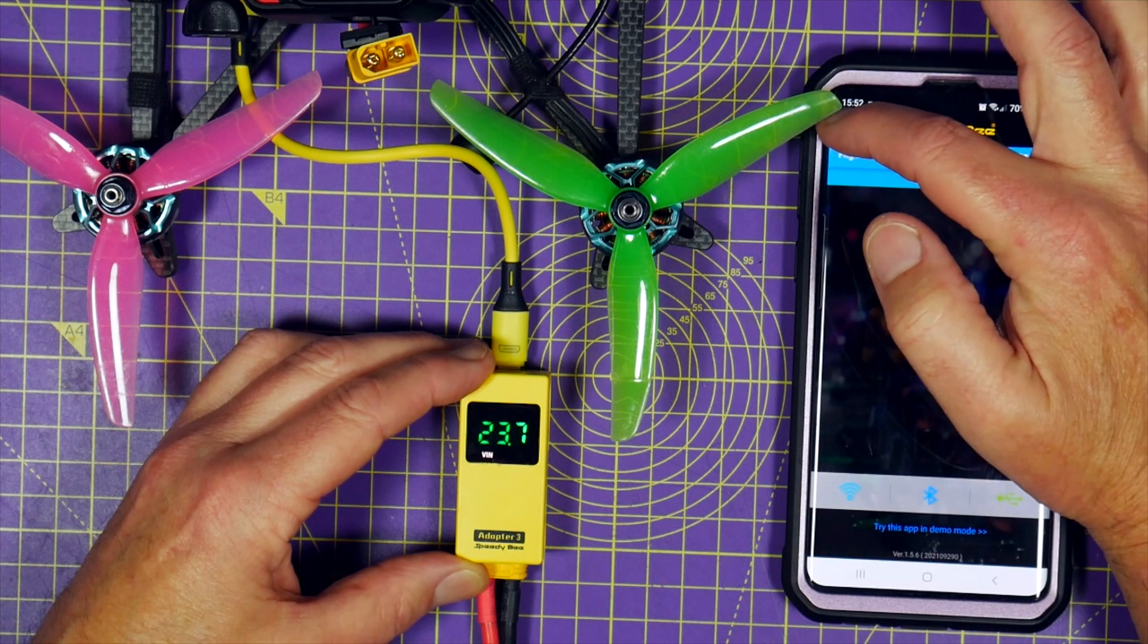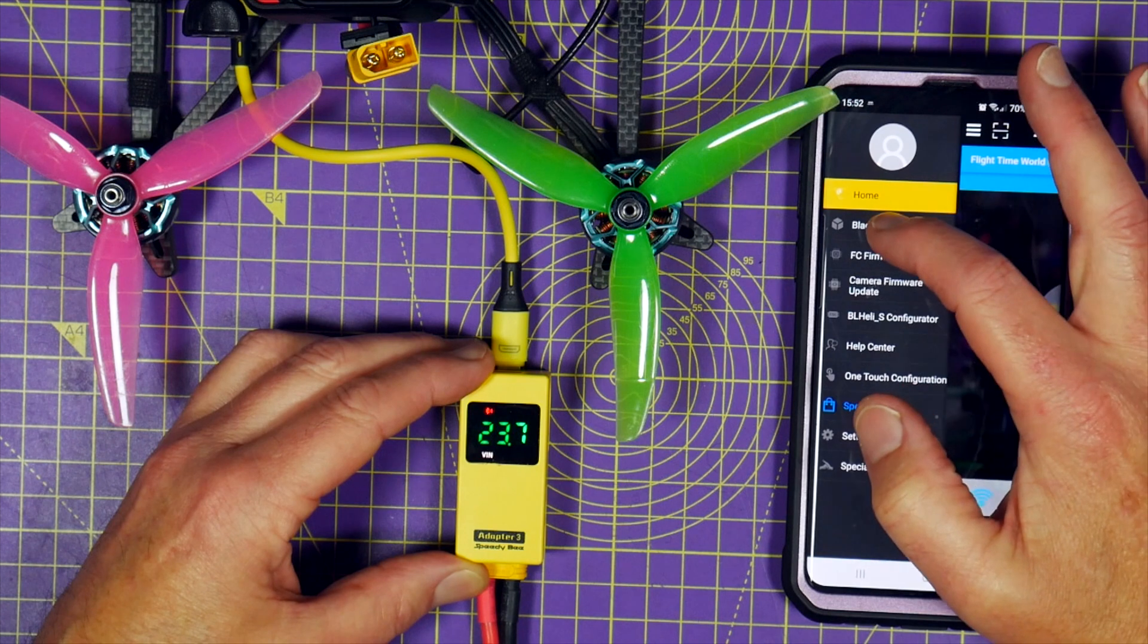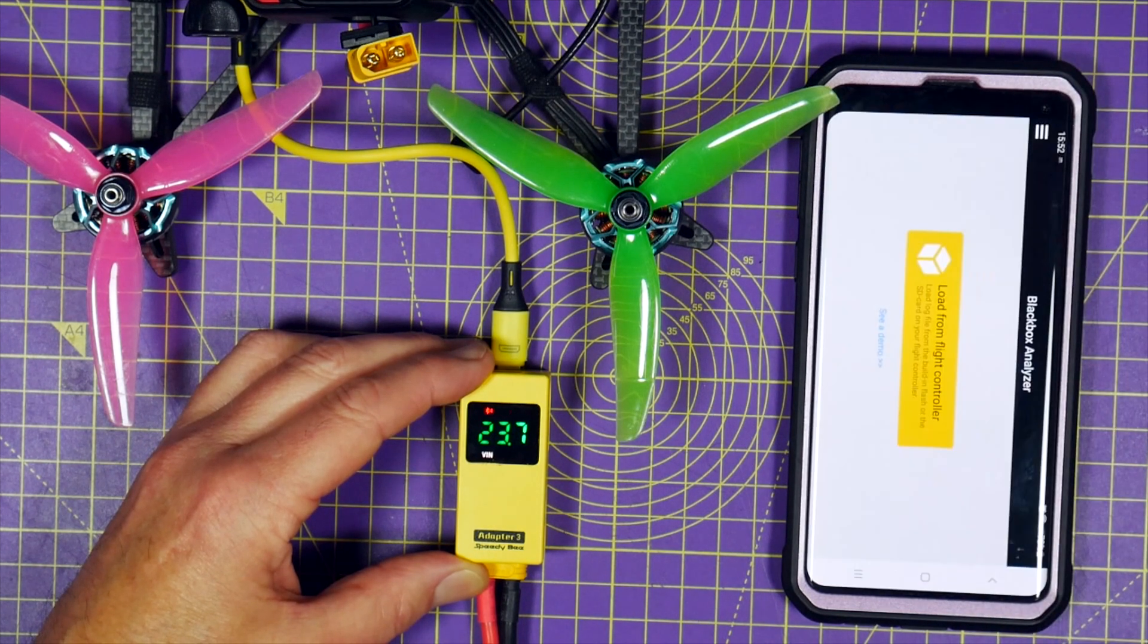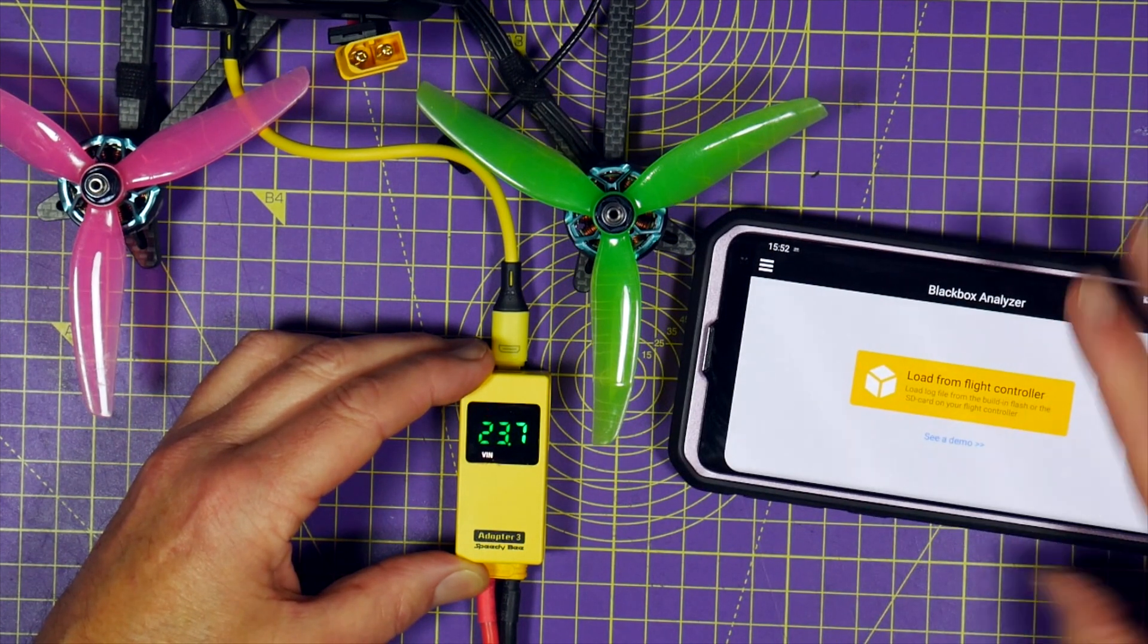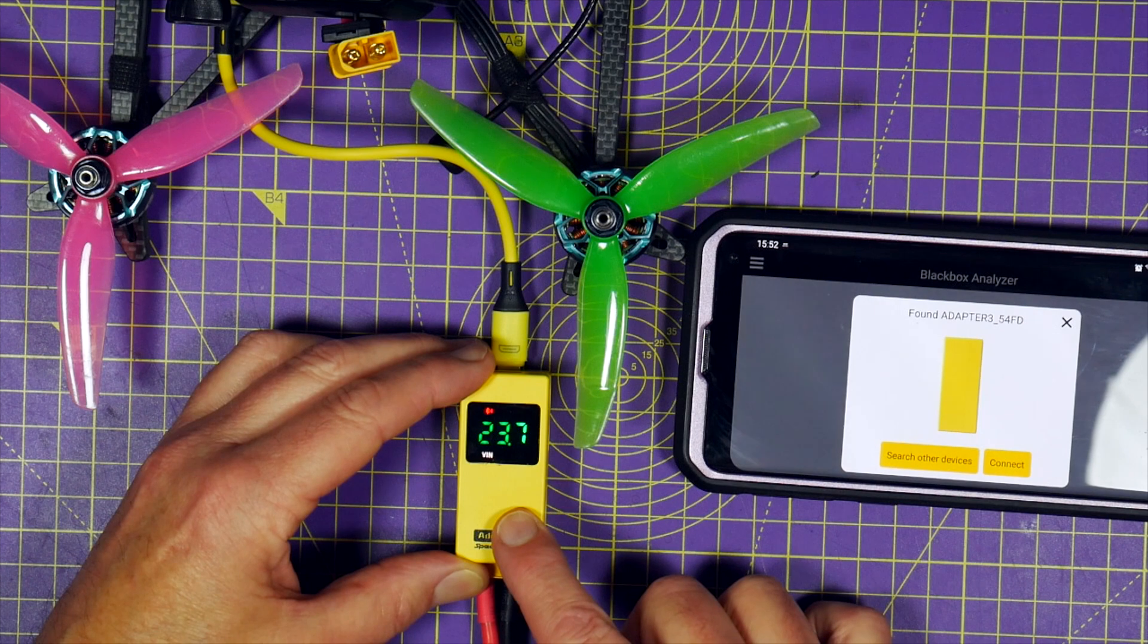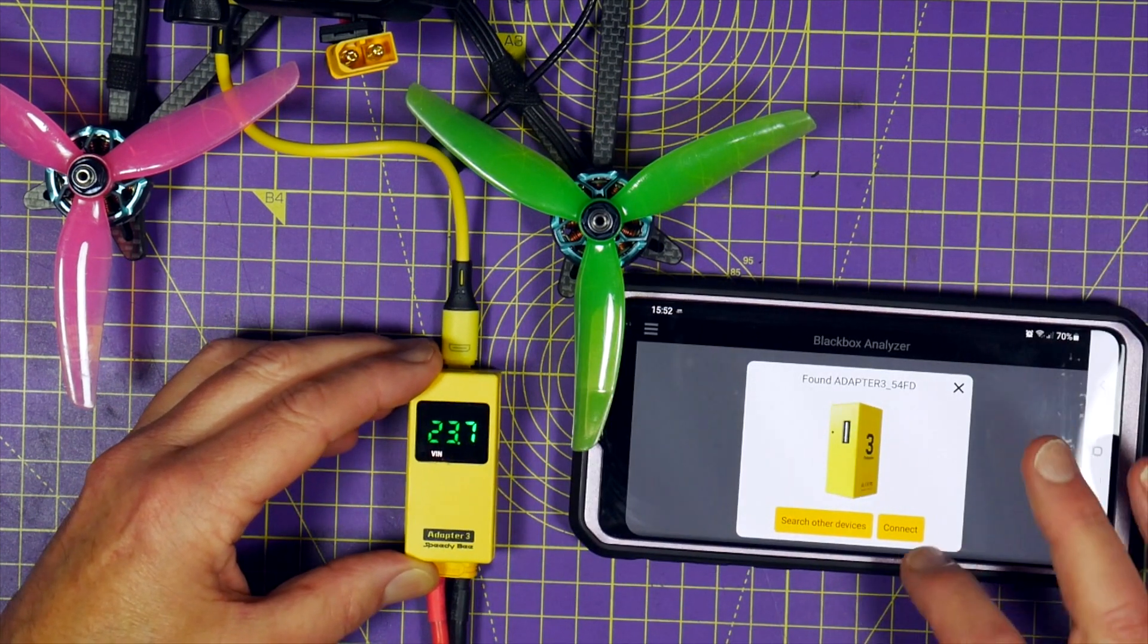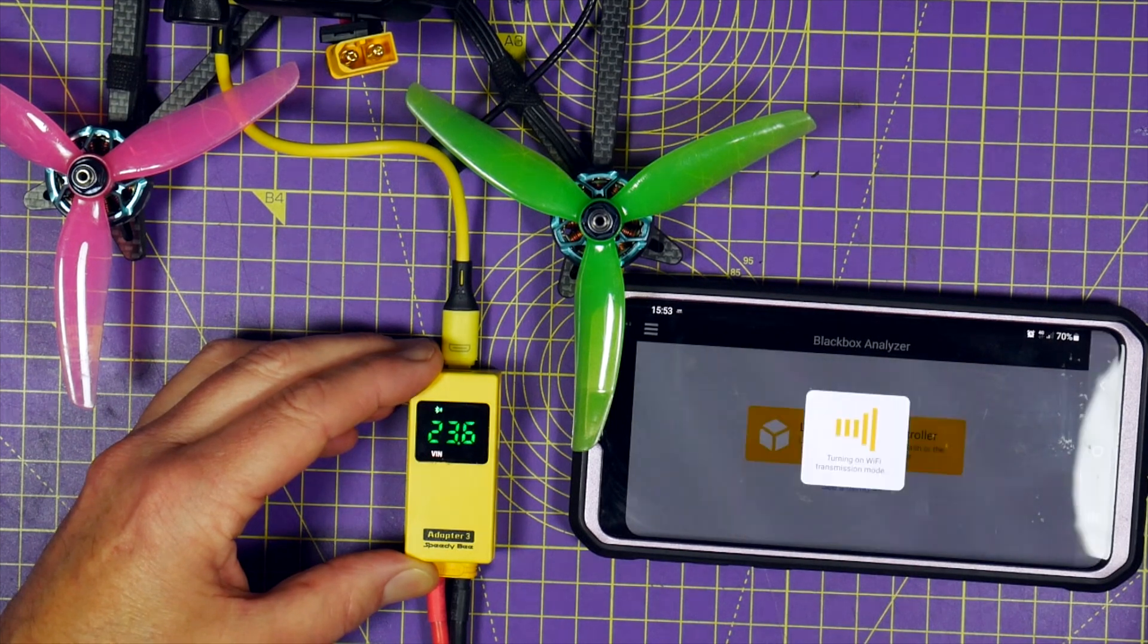So if we disconnect from this now and we go up here and let's have a look at the blackbox logs. For this it's going to use Wi-Fi. You don't have to go into your Wi-Fi settings on your phone. It just does it for you automatically. Just say connect. So we're turning on Wi-Fi transmission mode on here.